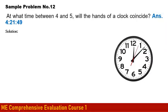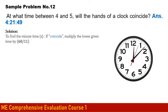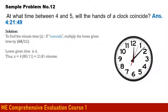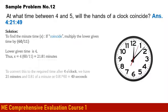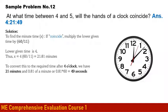Sample Clock Problem 2: At what time between 4 and 5 o'clock will the hands coincide? Multiply the lower hour (4) by 60/11: 4 × (60/11) = 21.81 minutes. Converting to minutes and seconds gives 21 minutes and 49 seconds. So the hands coincide at 4 o'clock, 21 minutes, and 49 seconds.